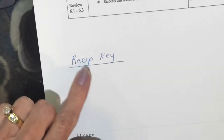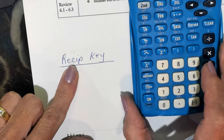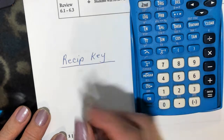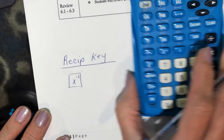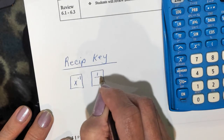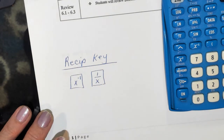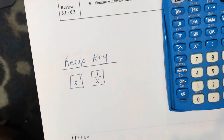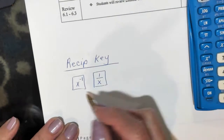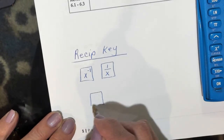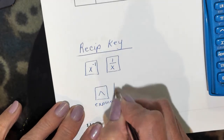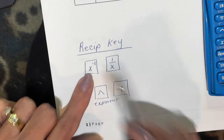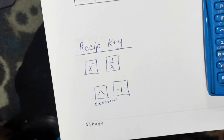If you have a calculator like mine, the reciprocal key is x to the negative 1. Some of you might have a different calculator — other calculators have a reciprocal key that looks like 1 over x. If you don't have either of those keys, you would use your exponent key and enter an exponent of negative 1. We are going to be taking reciprocals of functions today, so I wanted to quickly review that.